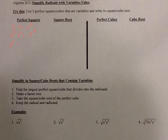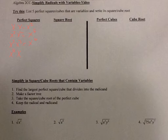x to the third times x to the third is x to the sixth — remember, when you multiply same bases you add the exponents — so x to the sixth is a perfect square. x to the fourth times x to the fourth is x to the eighth, and x to the fifth times x to the fifth is x to the tenth. Both are perfect squares.